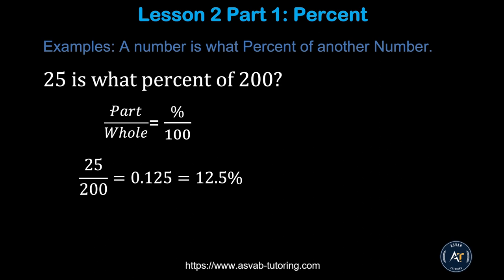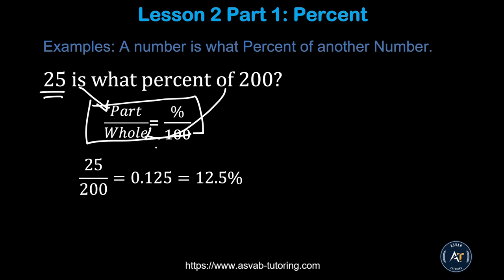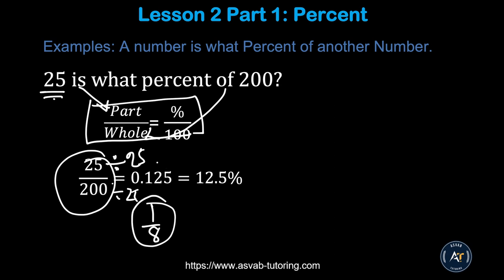Let's learn a formula that helps you solve most percent-type problems. Example: 25 is what percent of 200? Use the formula: part over whole equals percent over 100. Remember: 'is' means part, 'of' means whole. So 25 is the part, 200 is the whole. Set up 25 over 200, simplify by dividing both sides by 25 to get 1 over 8, which equals 0.125.